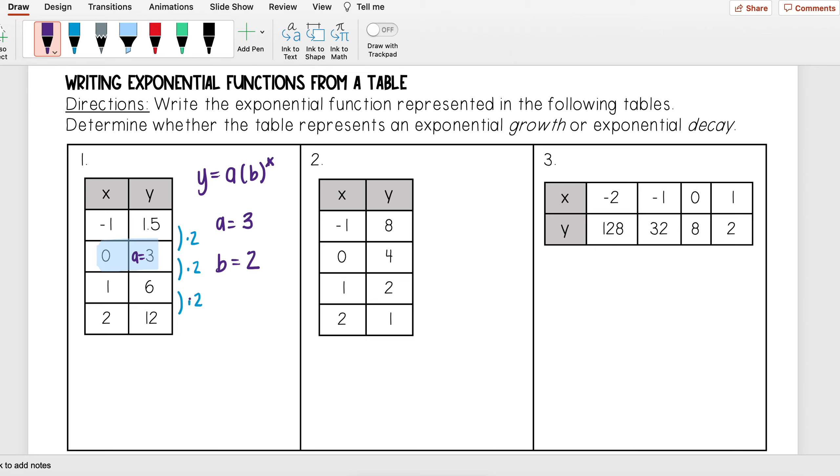Here I see 12 divided by 6 is equal to 2. So I have my a, I have my b, and that means that my exponential function is three times two to the x.